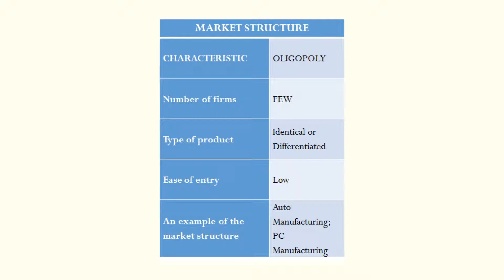The type of product in oligopoly can be identical or differentiated, which is a way of saying it's not a terribly important characteristic. Product type was key in perfect competition and monopolistic competition, but in oligopoly it's not a defining characteristic — what's more important is the fact that there are a few firms.